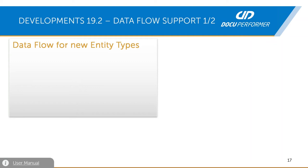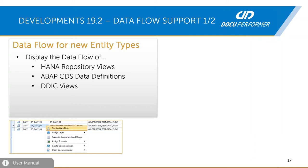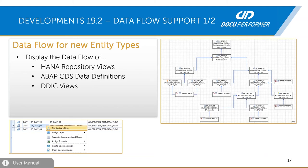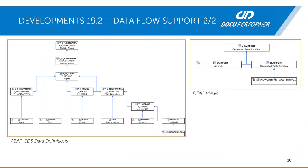Now I'd like to move on to the next big improvement: the data flows. In older versions it was only possible to display data flows for BW InfoProviders. Now it's also possible for other object types: HANA repository views, ABAP CDS data definitions, and DDIC views. They can be called via the context menu, as you know from the BW InfoProvider function. Currently it's not possible to execute analyses on these new types. You can display the data flow of a calculation view, a data flow of an ABAP CDS data definition, and a data flow of DDIC views.